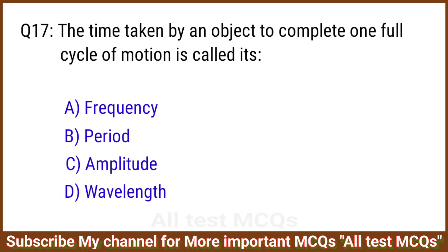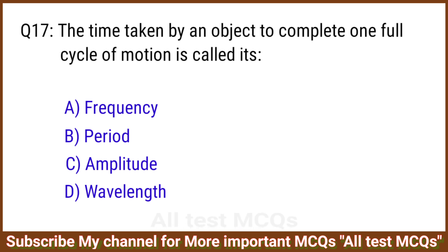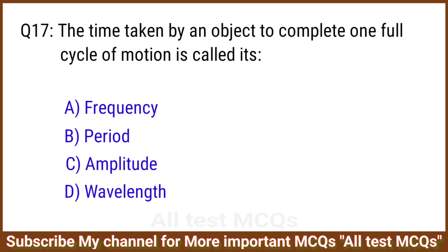Q17. The time taken by an object to complete one full cycle of motion is called its? The correct answer is option B: Period.